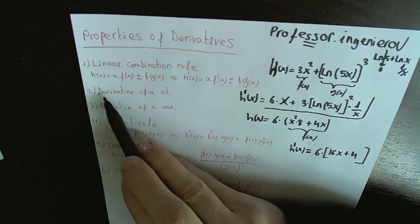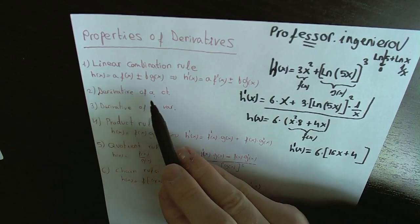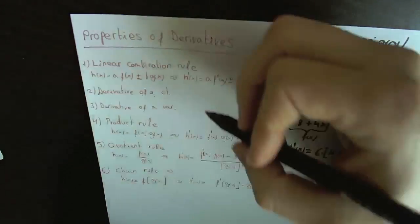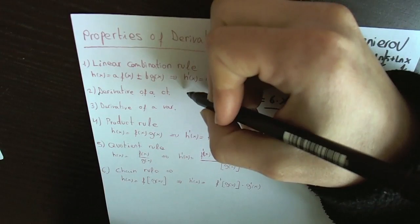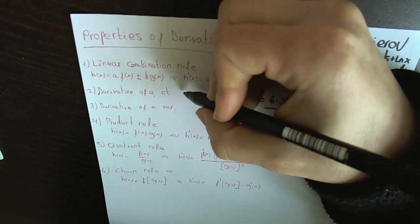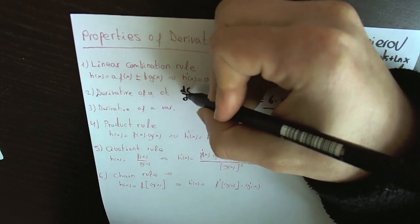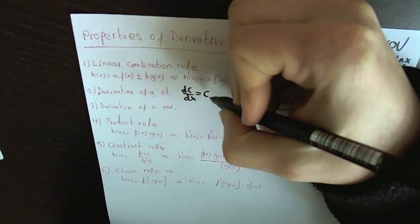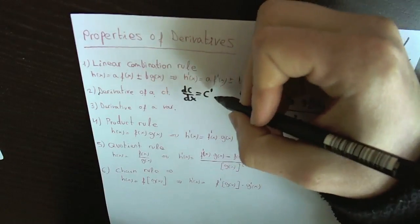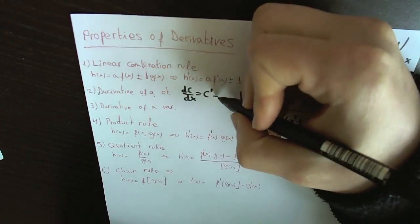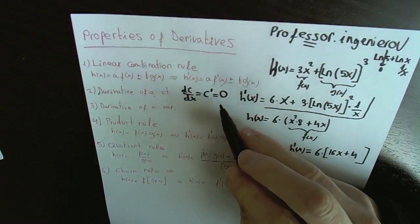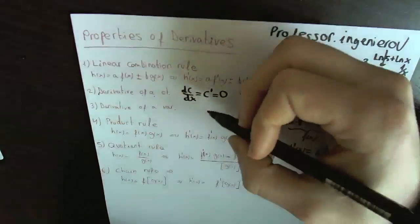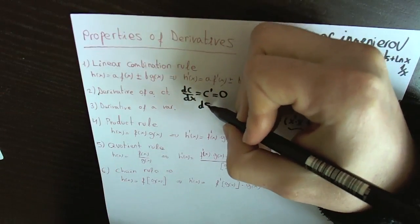Property number two: the derivative of a constant is always zero. If we have any constant, its derivative with respect to x — written as c prime — will always be zero. For example, the derivative of the number 5 with respect to x is zero. This is always the case — a very important property.